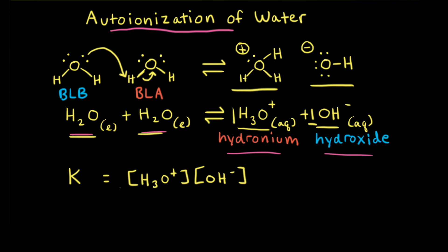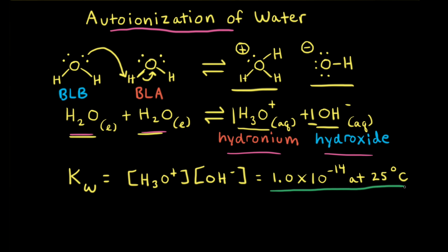Normally we would write Kc, where C stands for concentration. However, this is a special equilibrium constant expression for the autoionization of water, so instead of Kc we write Kw, where W stands for water. Kw equals 1.0 × 10⁻¹⁴ at 25°C. With such a low value — much less than one — we have an extremely small concentration of hydronium and hydroxide ions at equilibrium, so mostly we have H2O molecules.